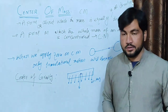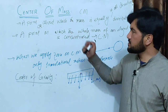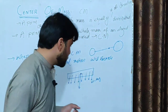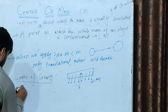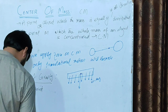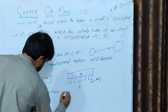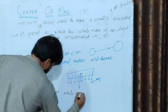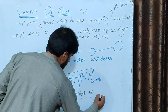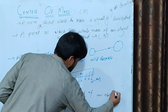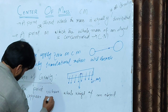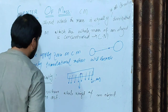The center of gravity is the point where the whole weight of an object appears to act. That point is called the center of gravity.